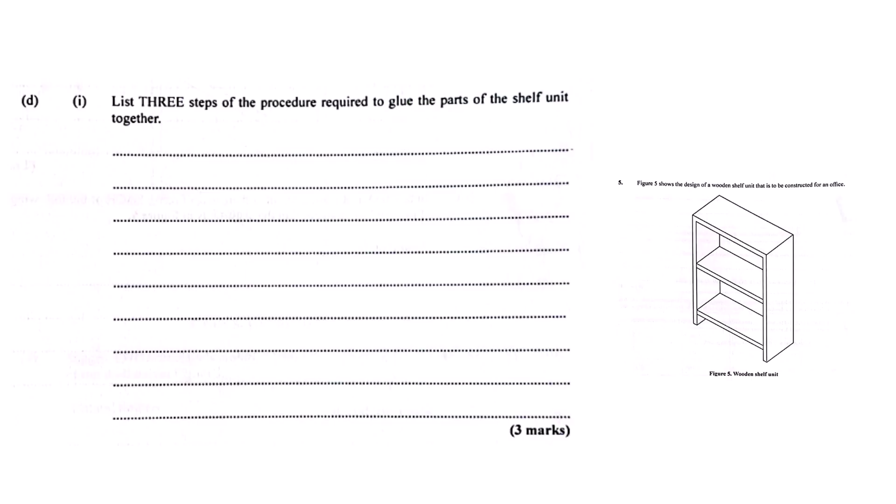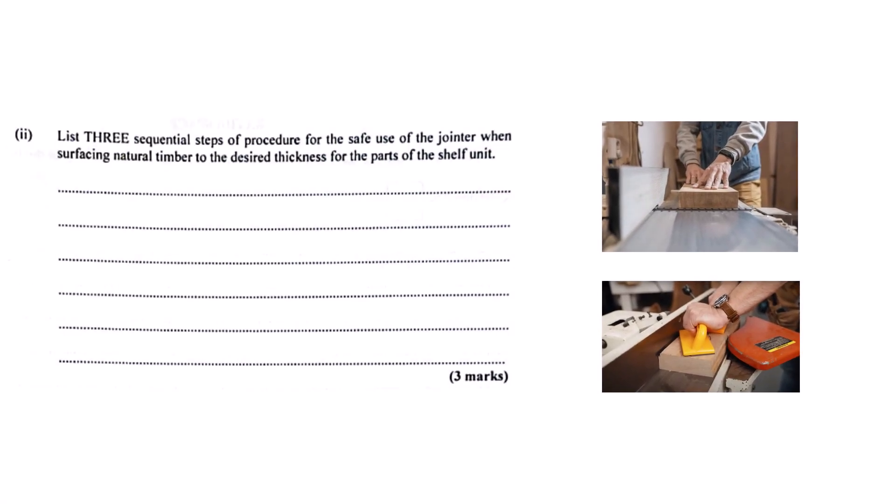You mentioned joining edges earlier, maybe with a power tool like a jointer to get them perfectly straight for gluing. Safety must be huge there. Absolutely. Jointers are powerful machines. Number one, always check the guard is working and covers the blades properly. Make sure the fence is square and locked. Never put your hands near the blades. Always use push blocks or push sticks to feed the wood over the cutter head. And feed the wood slowly and steadily. Don't force it. Always try to feed it with the grain of the wood, not against it, for a cleaner, safer cut.